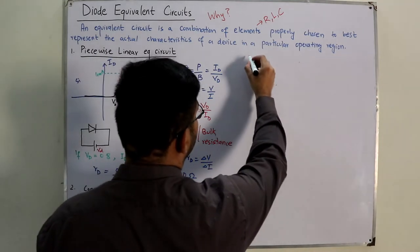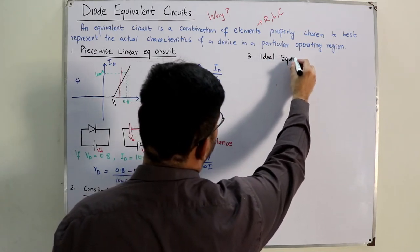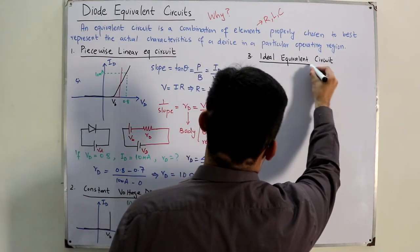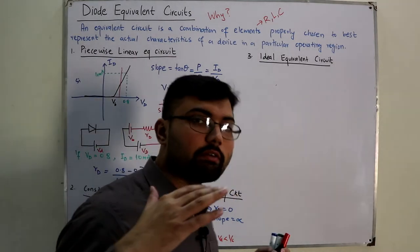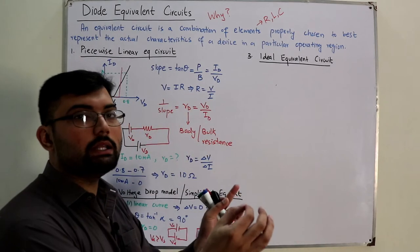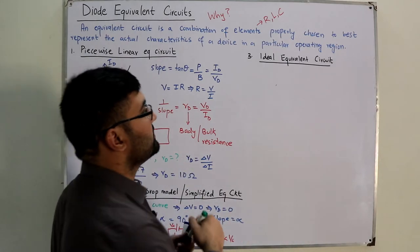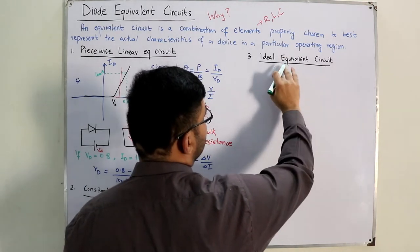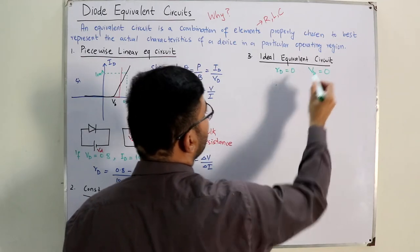Number 3 is the ideal equivalent circuit. In the ideal equivalent circuit, we don't have any body resistance and we don't have any barrier potential. You just apply the voltage and without any resistance the current flows — the resistance of the diode is zero, and the barrier potential is also zero.